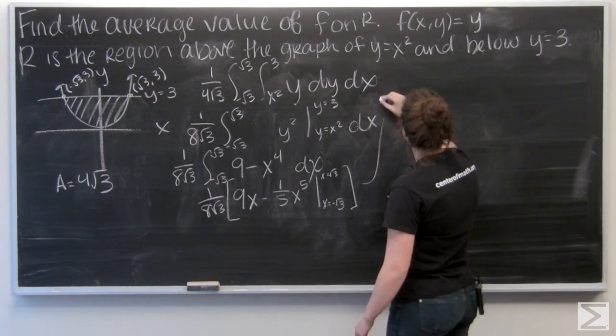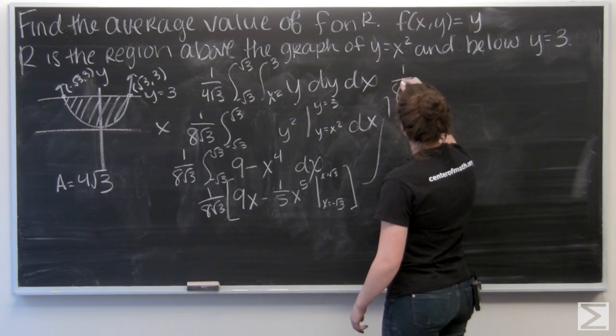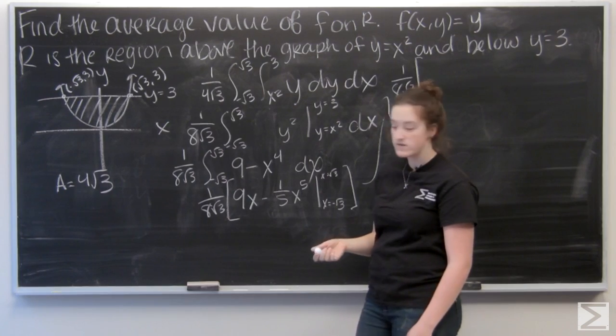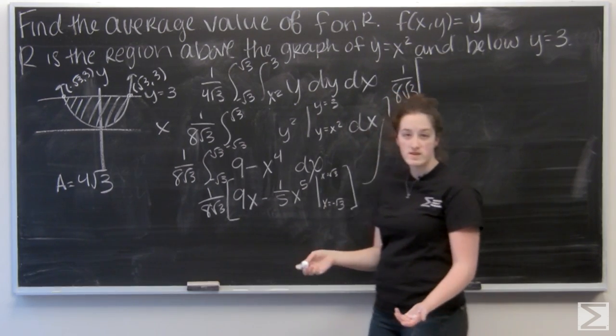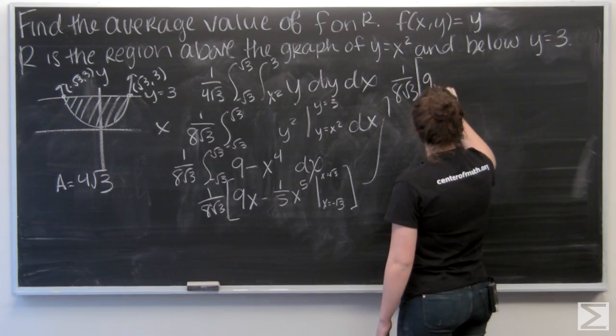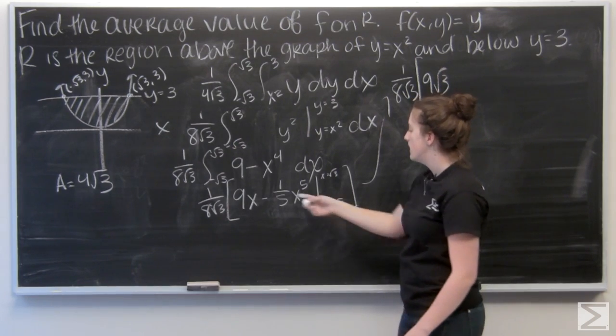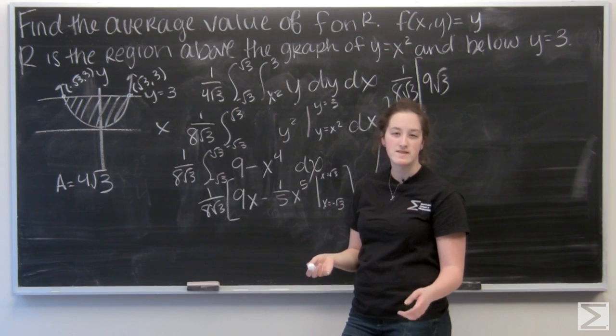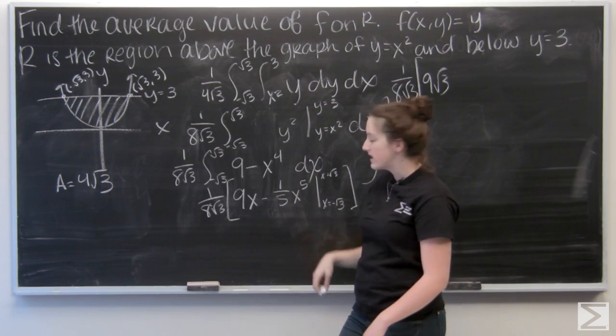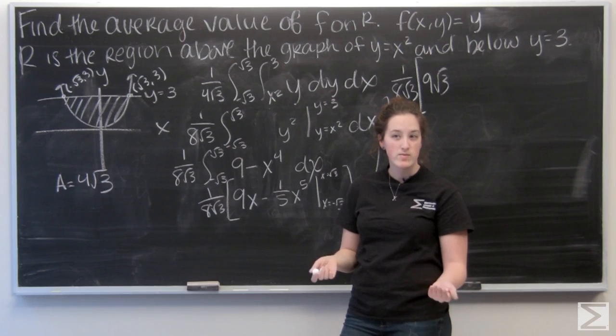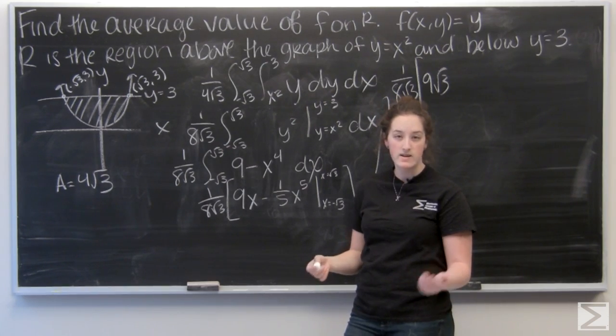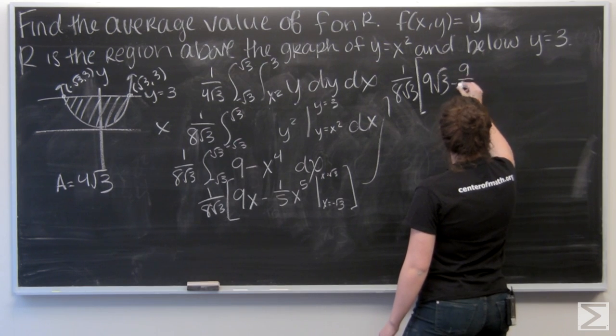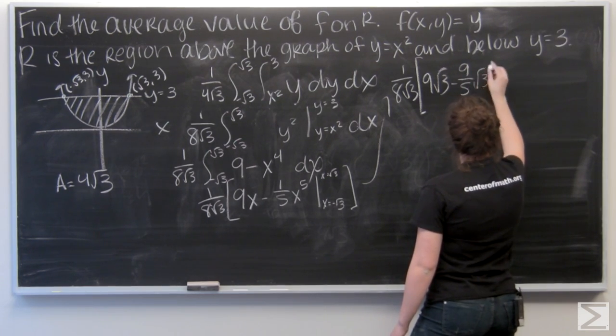So let me move up here. Let's plug in root 3 first. 9x becomes 9 square root 3, and negative 1 fifth x to the 5th becomes negative 9 fifths root 3. If I had x to the 4th, then when I plugged in root 3 I would get 9. Then I have that extra root 3 hanging out.